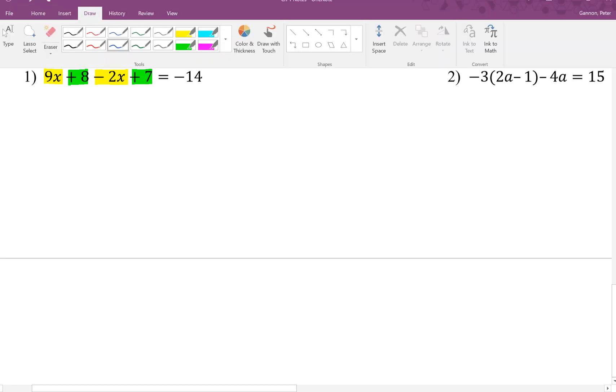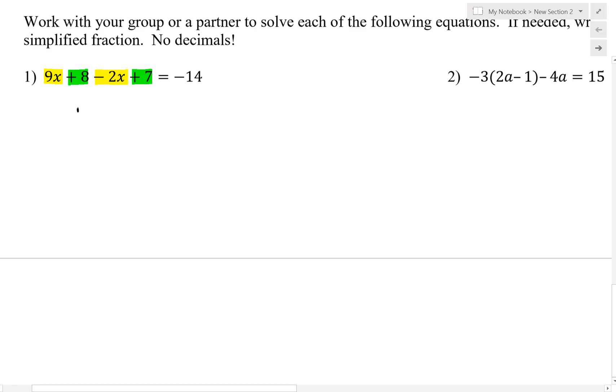What it's going to look like from there is we have 9x minus 2x, which is 7x. We have positive 8 plus 7, which is positive 15. We're going to just bring down the equal sign, and the negative 14 is the only thing there, so it's going to come straight down.